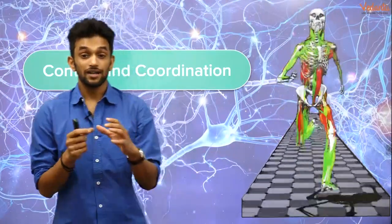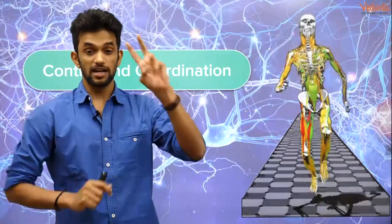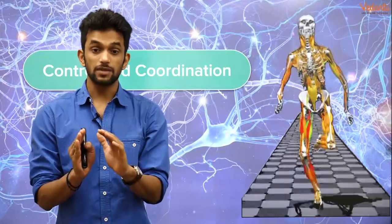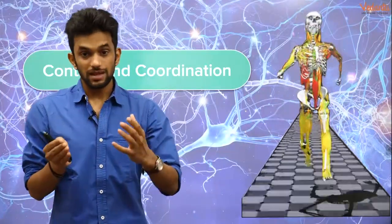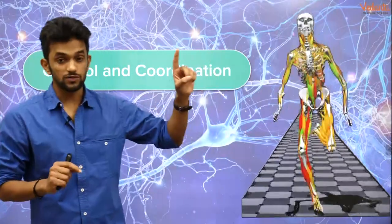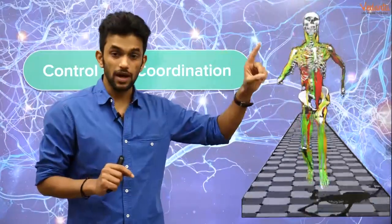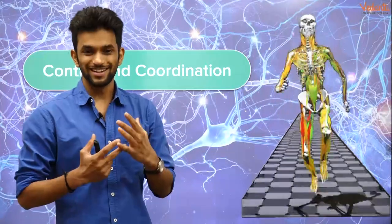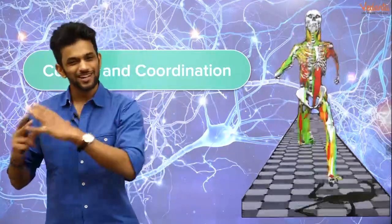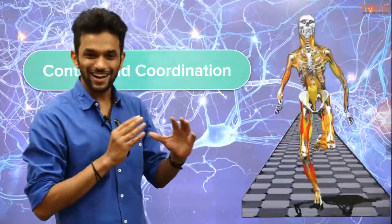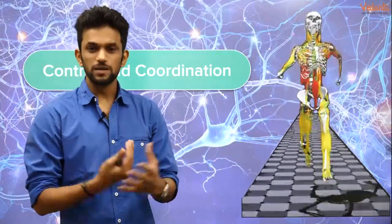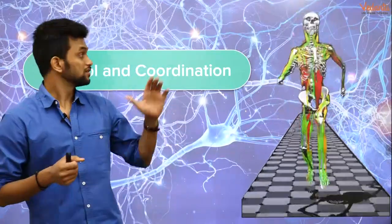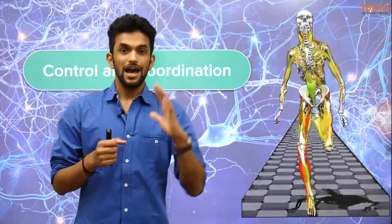We have already studied respiration and transportation from the first chapter, Life Processes. Now we are in the second chapter, Control and Coordination. We studied growth control and coordination in plants. This is the second part, and today I am going to teach you control and coordination in humans. Trust me, this is going to be more interesting than plants.